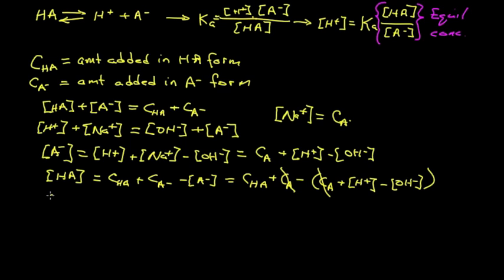So we can simplify this to get that HA is equal to the analytical concentration of the weak acid minus the hydrogen ion concentration and plus the hydroxide concentration.